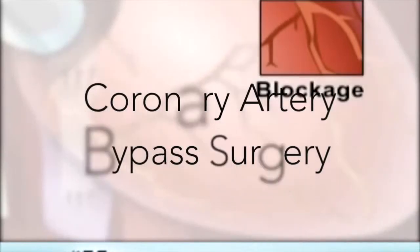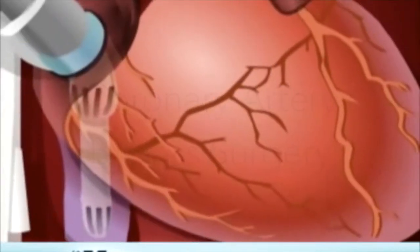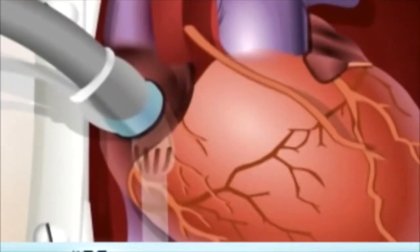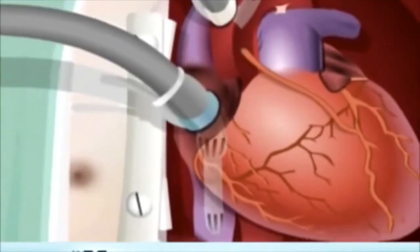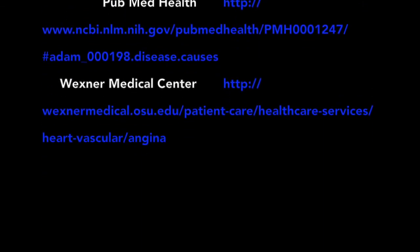The other surgery option is coronary artery bypass surgery. This surgery may be used to treat both stable and unstable angina. It is performed by taking healthy blood vessels from somewhere else in the body and attaching them around the problematic artery area, so that blood may bypass a blocked or narrowed heart artery. For more information on angina, visit the Mayo Clinic online or other websites.